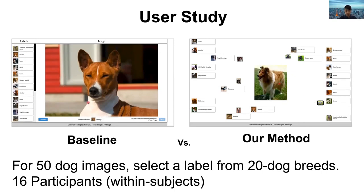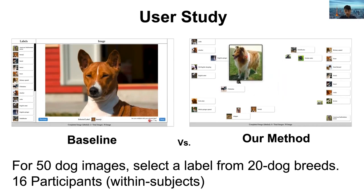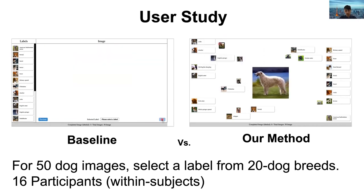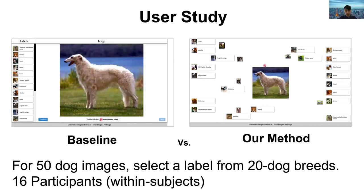In the traditional interface, users need to go through all the labels and try to find the best possible label for the image. However, in our spatial layout interface, users are allowed to organize concepts of labels and images on the open space before selecting a label for an image.